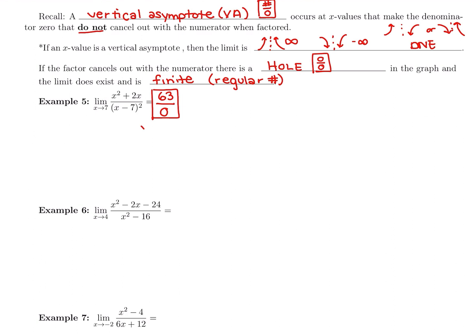Getting 63 divided by 0 gives an error in the calculator. Knowing we have a number divided by 0 indicates a vertical asymptote, so the answer will be infinity, negative infinity, or DNE. But as a second step, I'll still try to factor — there's a chance I plugged in wrong, and factoring will make the table of approaching values a little bit easier.